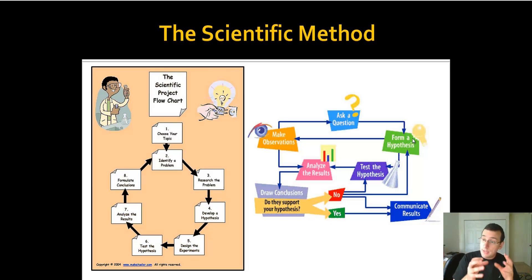And then once you think you understand the question enough, you come up with a possible explanation or a possible answer. A relationship, a prediction that establishes a relationship between the variables that you are examining.